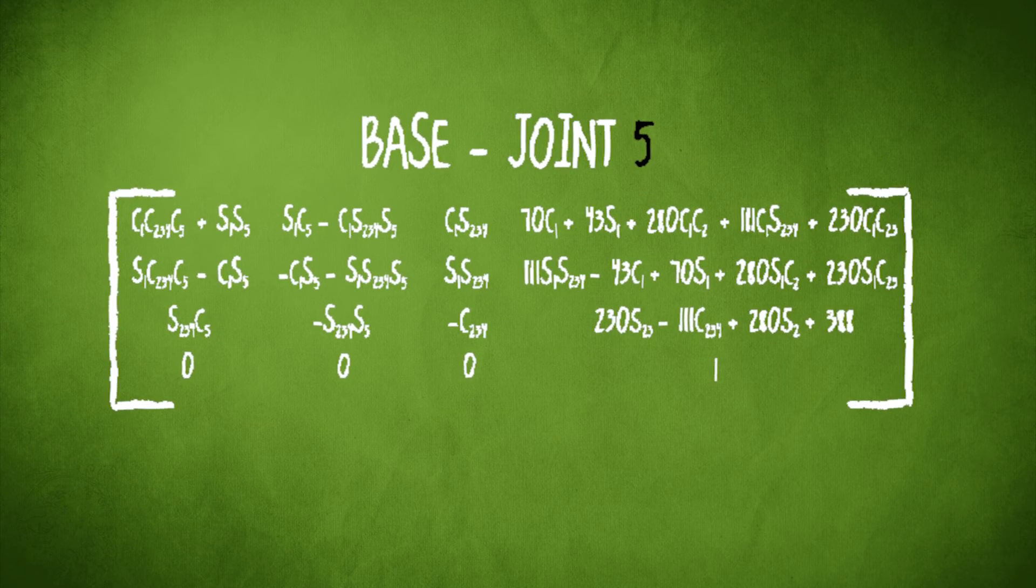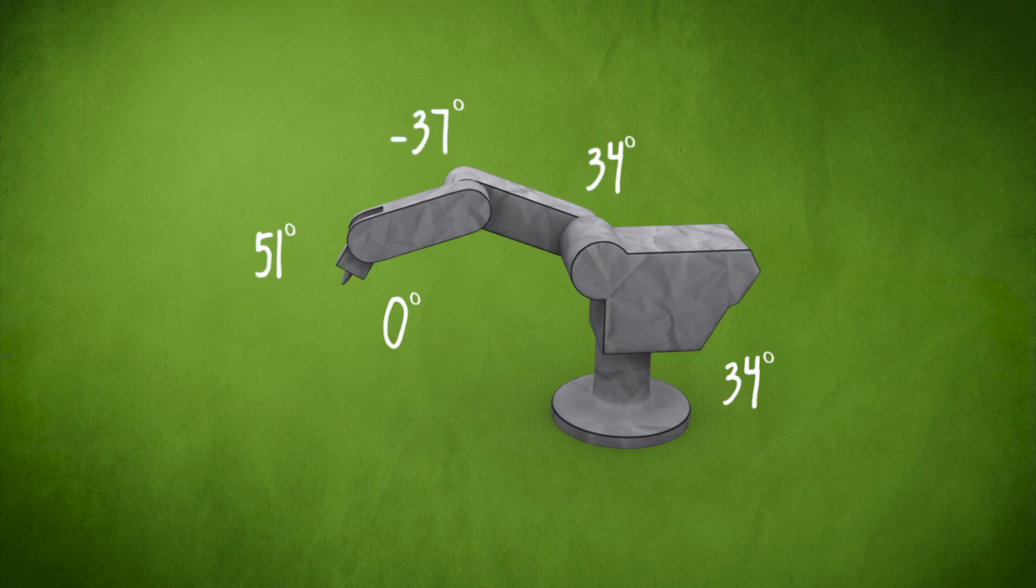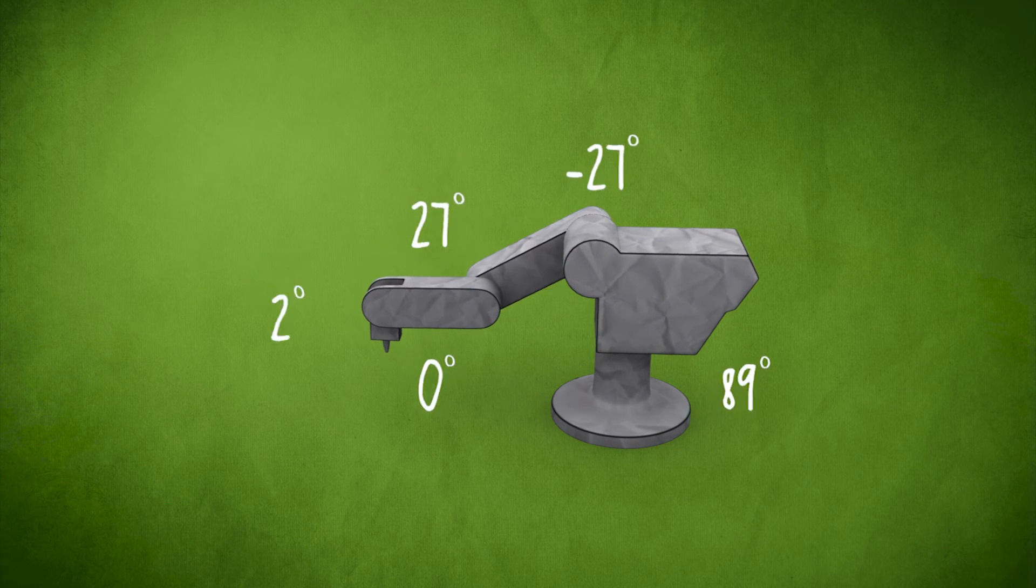From this matrix, we can now determine the position of a welding tip in 3D space. Using this, we can plug in new rotational values in the matrix and find out where the new pose will be.